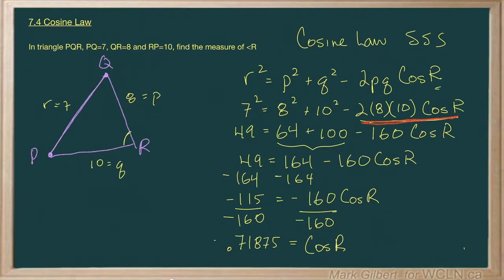Okay, now we're almost done. I'll just move up here. To find our angle, we'll use the inverse cosine of 0.71875. And I get angle R equal to 44.05 degrees.